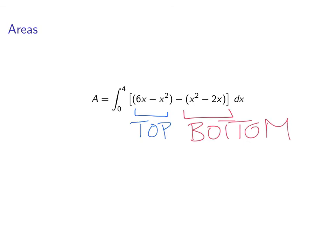And then the 0 to 4, that's because those are the bounds on where the region is. So x equals 4, we got that from the intersection point. That's the rightmost bound on the integral. And then 0 will be the lower limit.